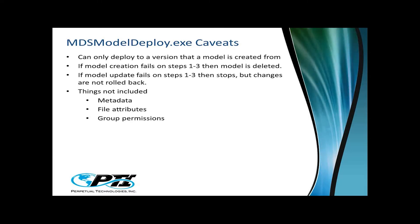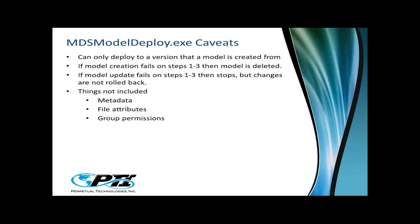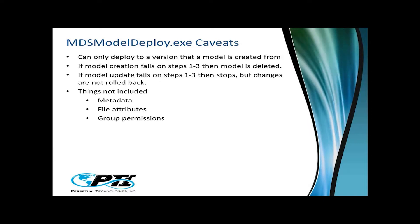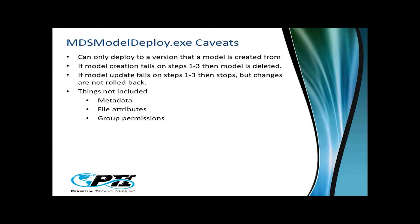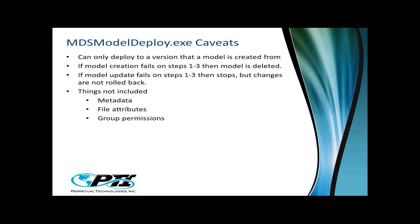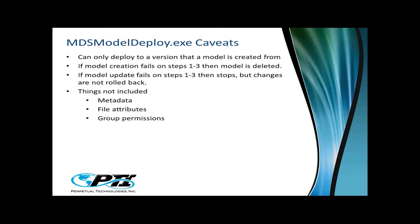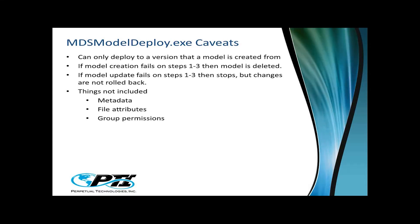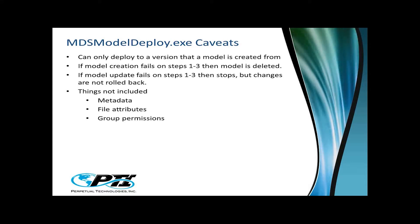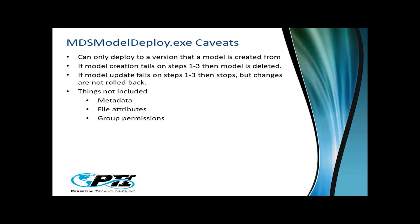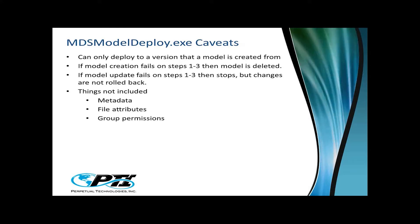Things not included in the deployment: metadata, file attributes, and permissions are not exported. When deploying from development to production, you'll need to map these out or work against the web service to apply group permissions for individuals, and get that straightened out so you can deploy the model and then deploy your group permissions separately.